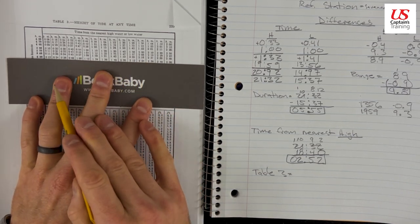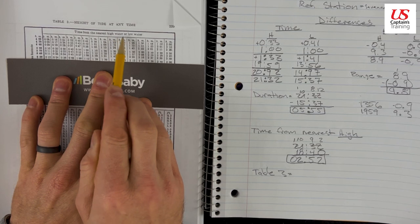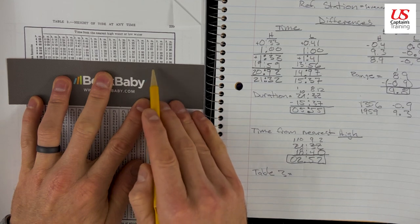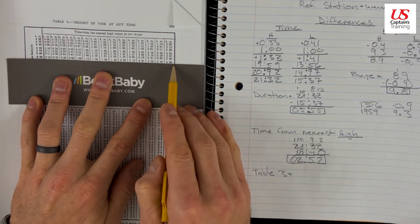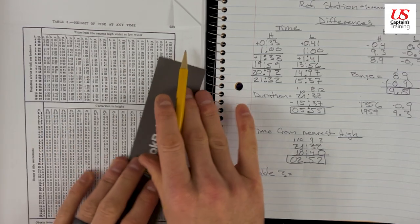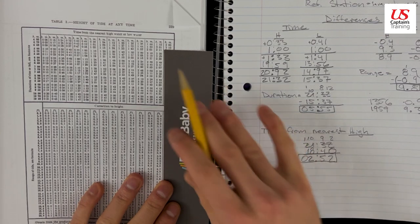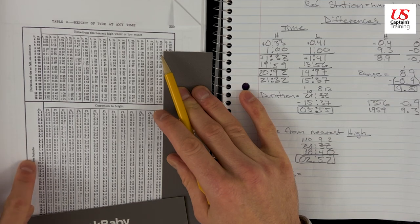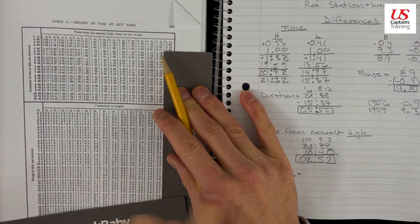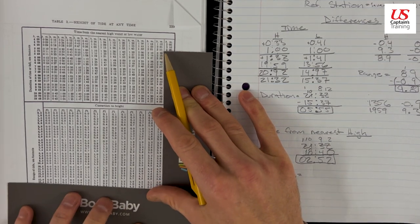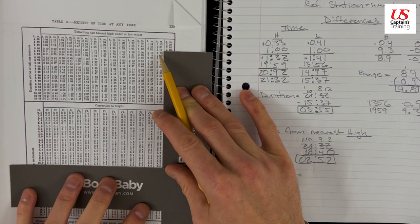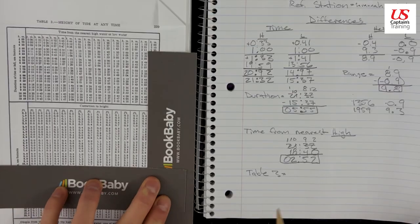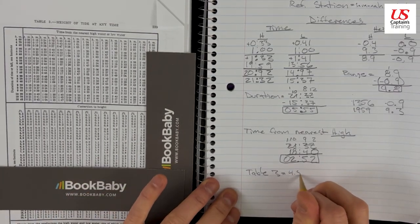And now we go time from nearest high water or low water. That's these numbers. So time from is 2:52. We're closest to 2:48. So we cruise down this column for 2:48. And we come in at range of tide. The range of our tide was 9.8. So where are we? 9.8. That's basically 10. Here. 4.5 feet. What we got from table 3 was 4.5 feet.